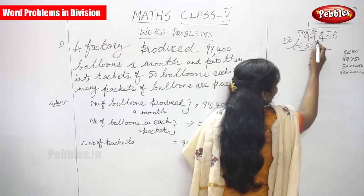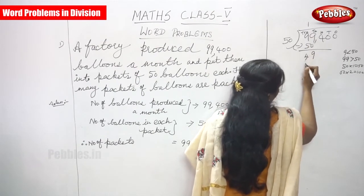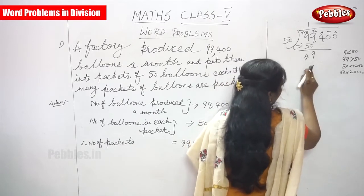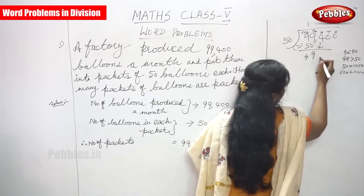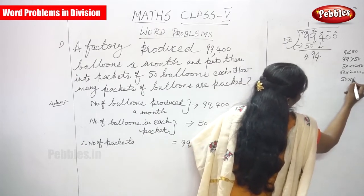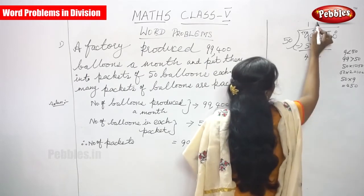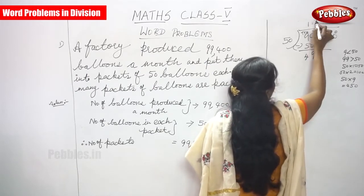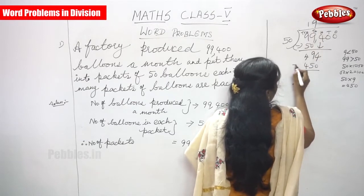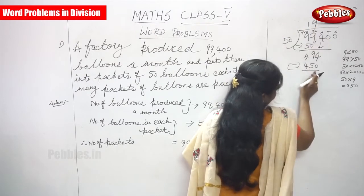99 minus 50: 9 minus 0 is 9, 9 minus 5 is 4. So compare with 49 and 50. Again, 49 is less than 50. Bring down the next digit, that is 4. So 50 into 9 you can get 450. You must put 9 on the top. That is 450. You have to subtract. 50 into 9 you can get 450.